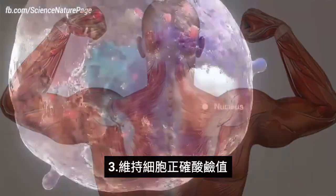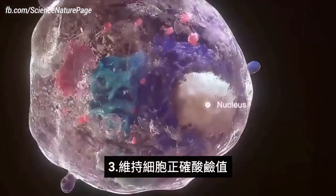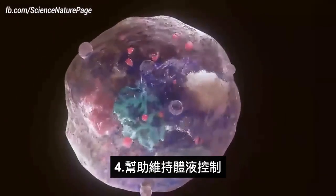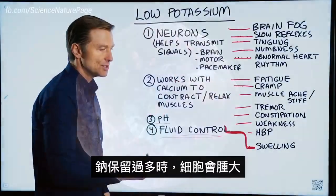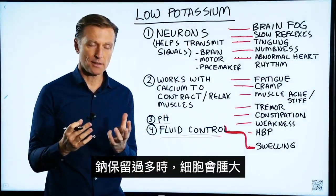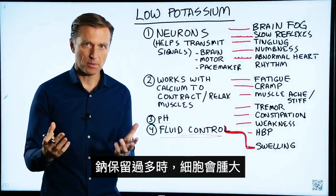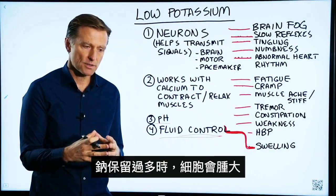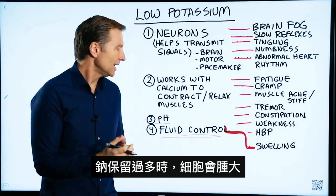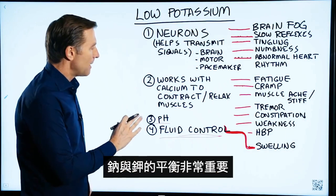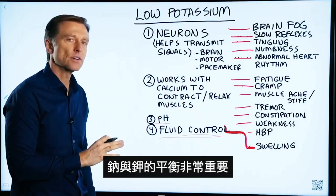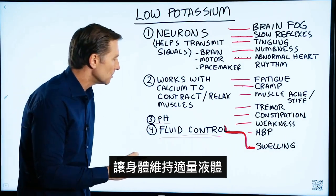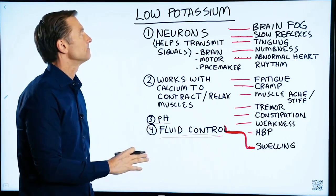Third, to help the cell establish the correct pH and help maintain fluid control. If there's a problem with sodium — for example, if you're retaining too much sodium — the cells are going to swell too much. So the balance of potassium and sodium is very important to maintain the proper volume of fluid through the body.